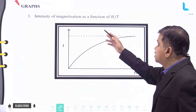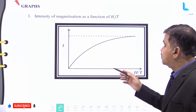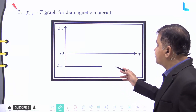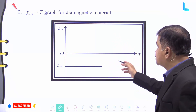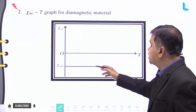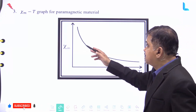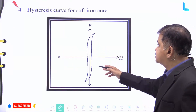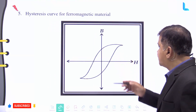You can see the graph of the intensity of magnetization as a function of H by T. The chi_m versus T graph for a diamagnetic material is shown here — it is parallel to the x-axis. Similarly, the chi_m versus T graph for a paramagnetic material is shown, along with the hysteresis curve for a soft iron core and for a ferromagnetic material.